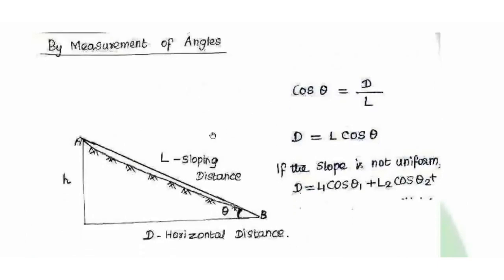First, by measurement of angles: for a regular slope, L is the sloping distance and d is the horizontal distance. A to B are the survey station points. We use a clinometer or other instrument to measure the angle θ. The formula is: cos θ = horizontal distance d divided by hypotenuse L, so d = L cos θ. If the slope is not uniform, then d = L1 cos θ1 + L2 cos θ2 + L3 cos θ3.